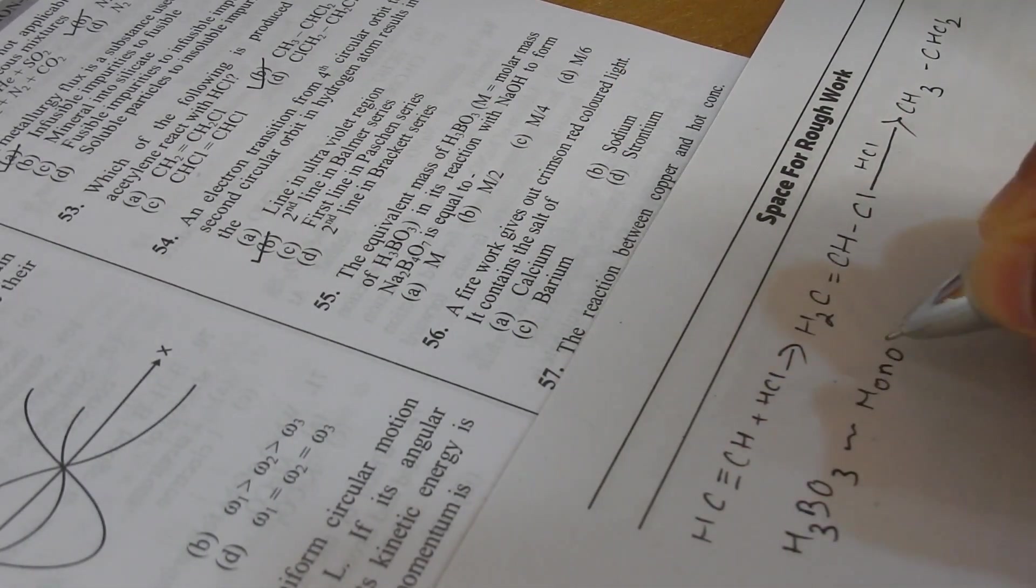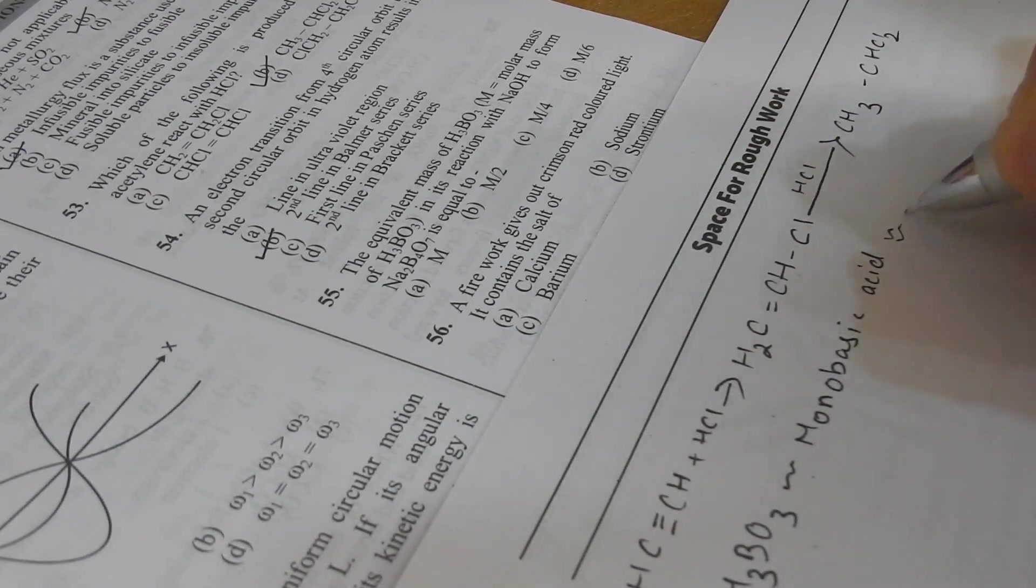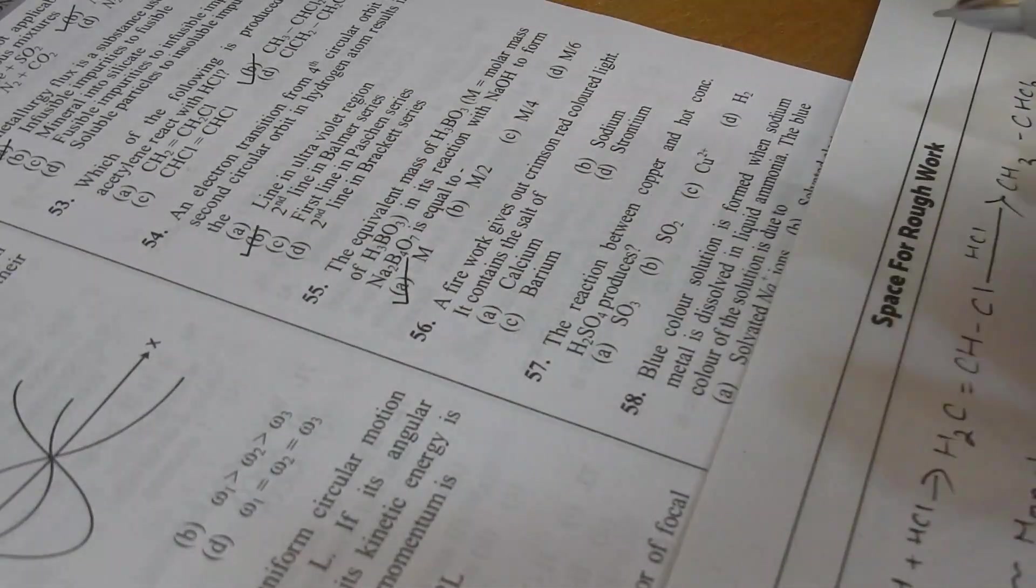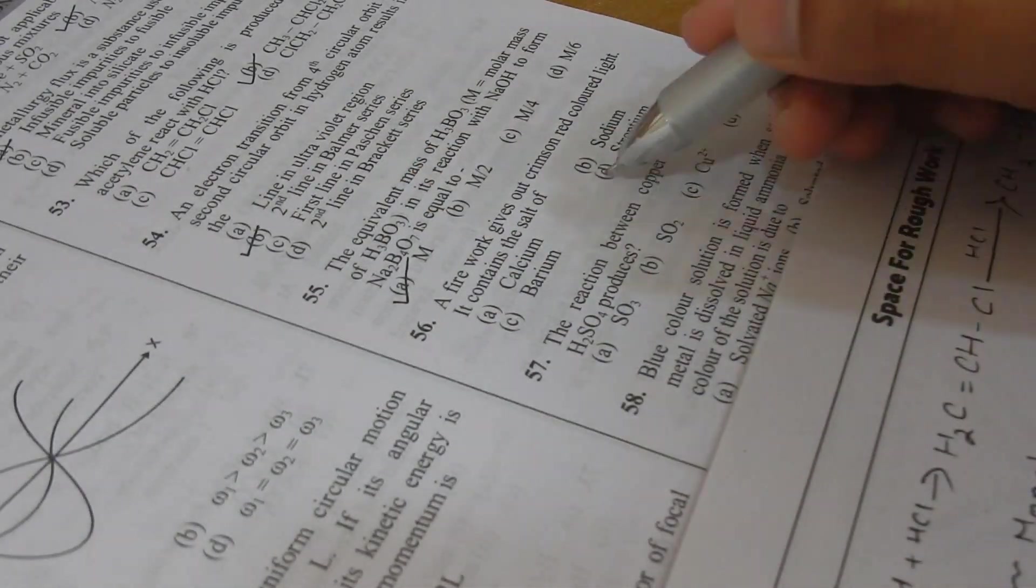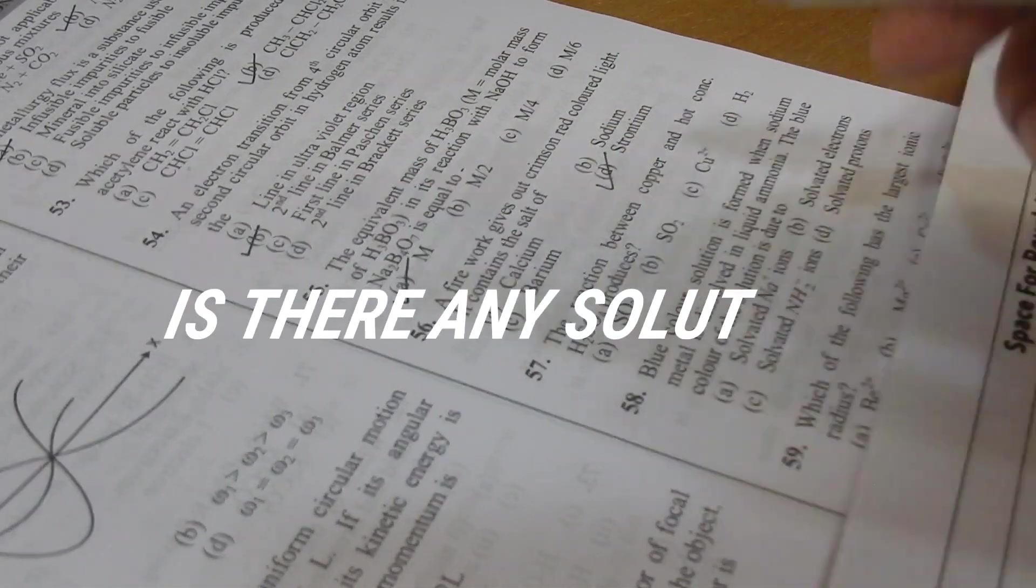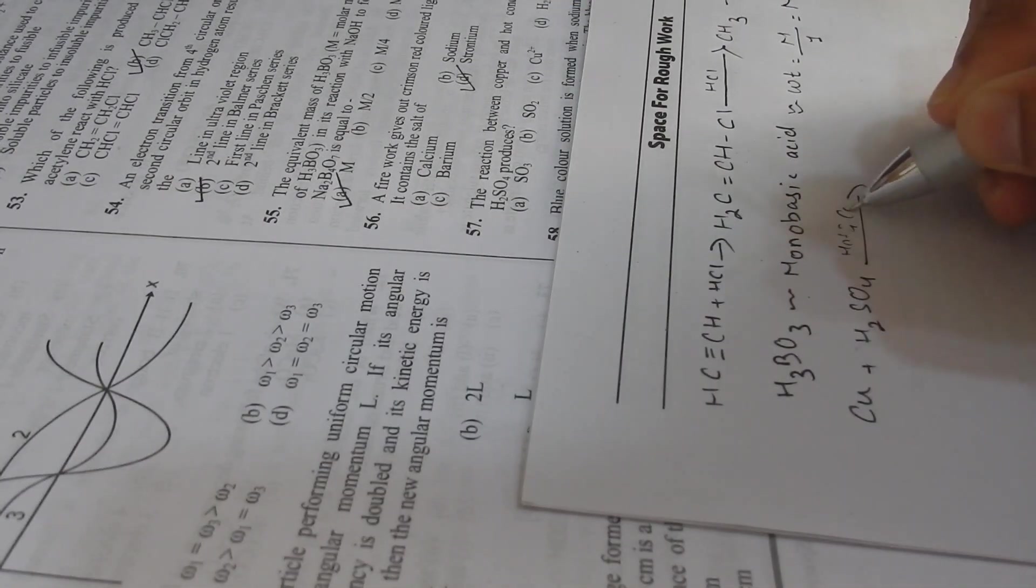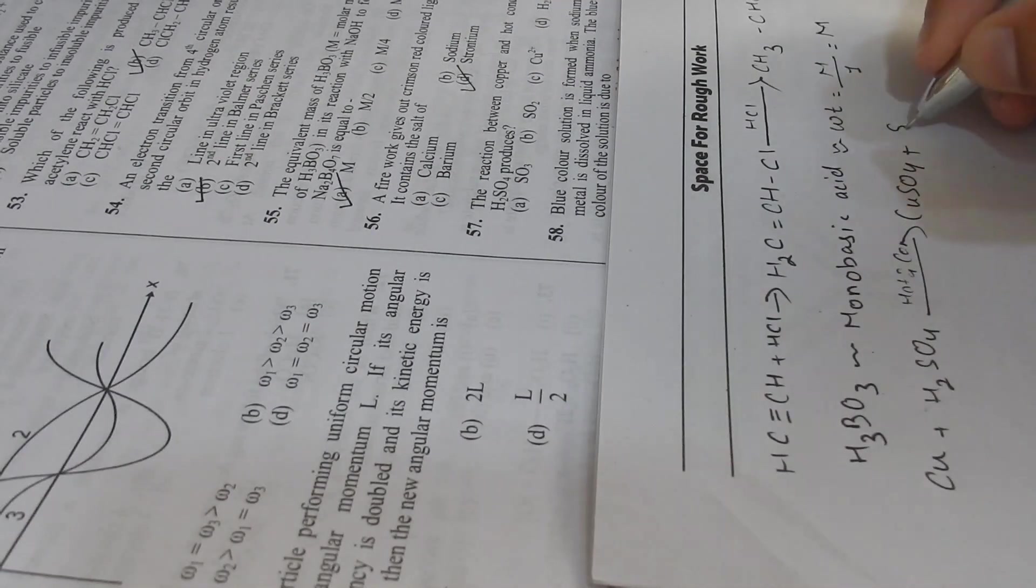When you look at toppers' marks, they are never less than 160. You just wonder what else are they doing. You have literally memorized each and every page of your chemistry notes, but still you seem to have stuck in the same score range.